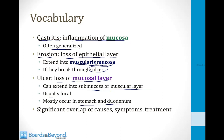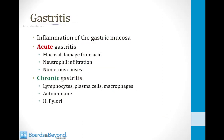What can be confusing is that gastritis, erosions, and ulcers can all have similar symptoms and even sometimes treatment. Gastritis is inflammation of the gastric mucosa, and it can be either acute or chronic, defined by the type of infiltrate seen on biopsy. Acute gastritis has a neutrophilic infiltration, while chronic gastritis has an infiltrate made up of lymphocytes, plasma cells, and macrophages.